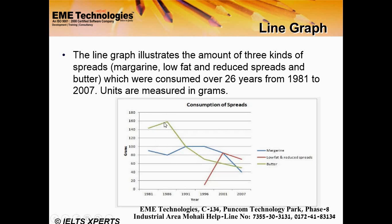A striking point is about butter consumption starting in 1981. The line graph illustrates the amount of three kinds of spreads — margarine, low-fat and reduced spreads, and butter — which were consumed over 26 years from 1981 to 2007. Quantities are measured in grams, covering the consumption of spreads.